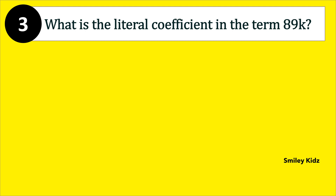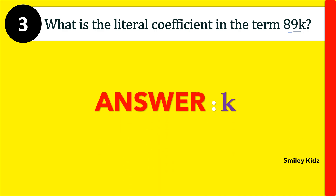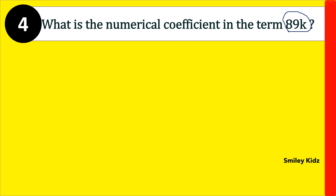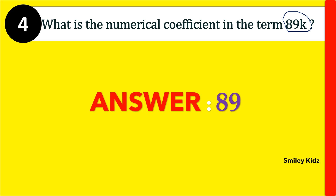Moving to question number 3. What is the literal coefficient in the term 89k? What is the numerical coefficient in the term 89k? The right answer is 89. The numerical coefficient in the term 89k is 89.